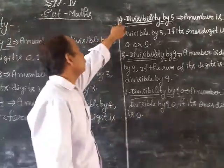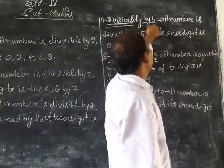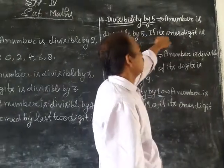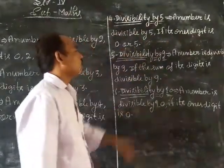Divisibility by 5: A number is divisible by 5 if its ones digit is 0 or 5.